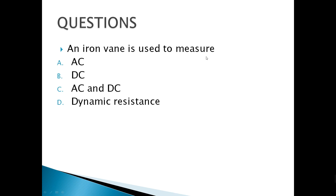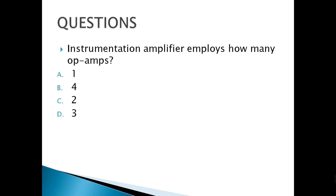An iron vane is used to measure letter B — direct current only. Instrumentation amplifiers employ how many op-amps? Take note: instrumentation amplifiers use three op-amps.